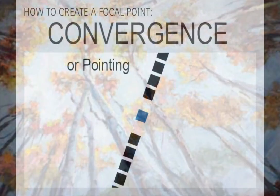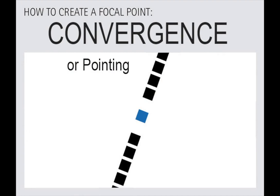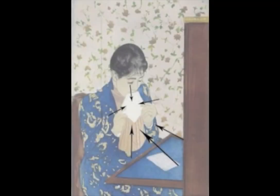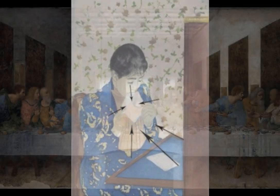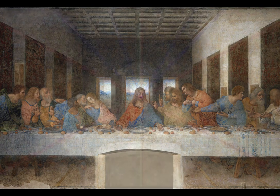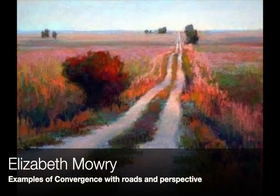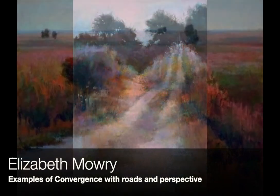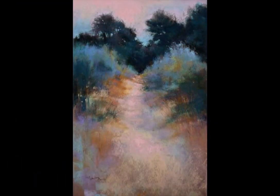The next technique in creating effective focal points is convergence, also called pointing. Notice in this Mary Cassatt painting how the elements are pointing towards the envelope, drawing your eye to that particular element of the painting. Also, in Leonardo da Vinci's famous painting The Last Supper, there are various elements he has used to draw the focal point into the central figure of Christ. Using perspective is also a very powerful way to create a focal point by the use of convergence.